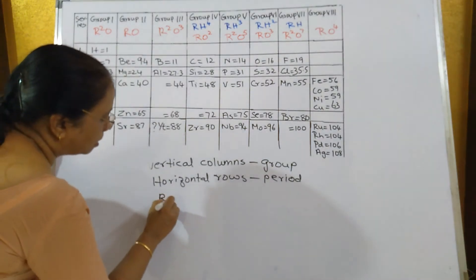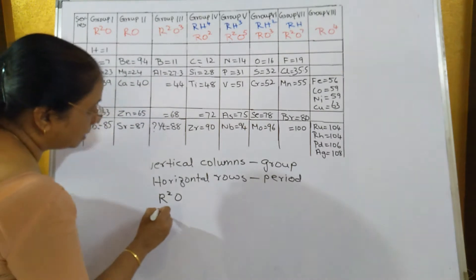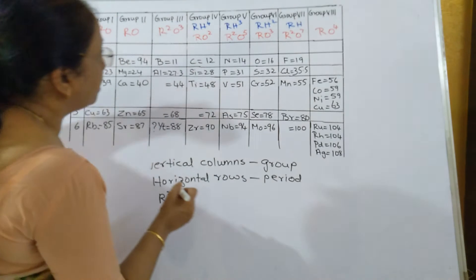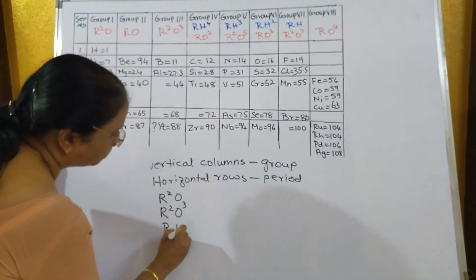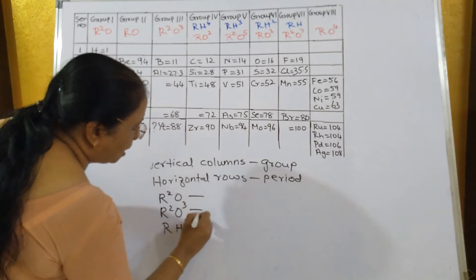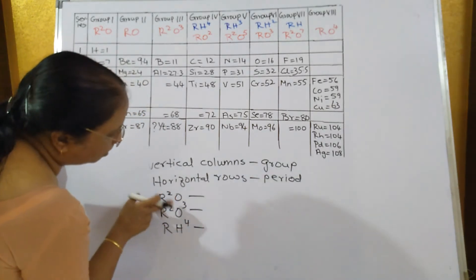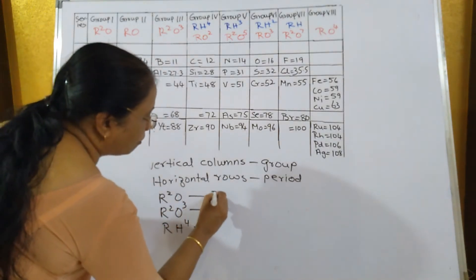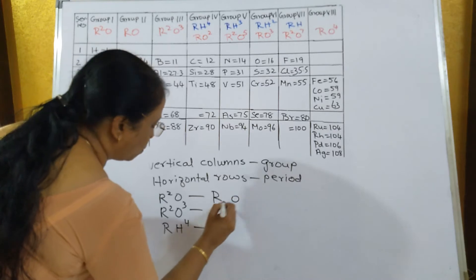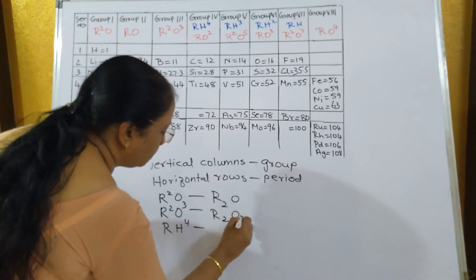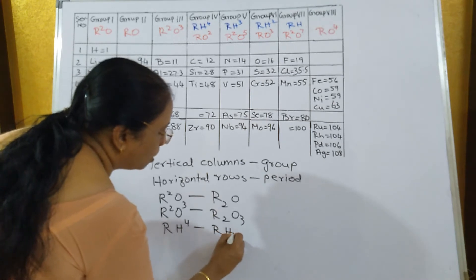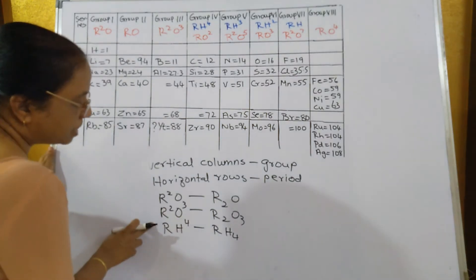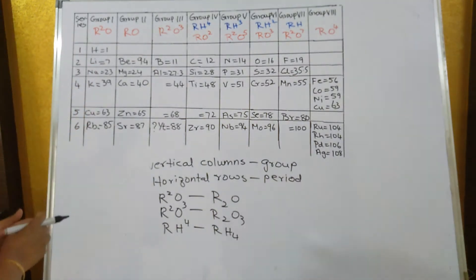For example, R2O, R2O3, and RH4. These are the molecular formulas of oxides and hydrides. Today we write the molecular formula as R2O, R2O3, and RH4. Here R is the element in that particular period and group, O is the oxide, and H is the hydride of that particular element.